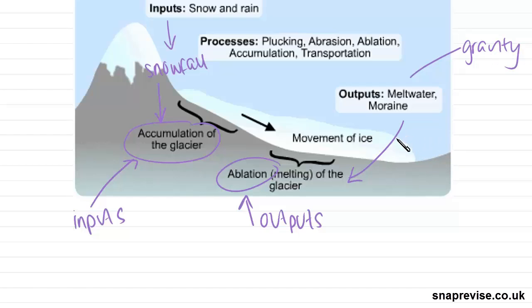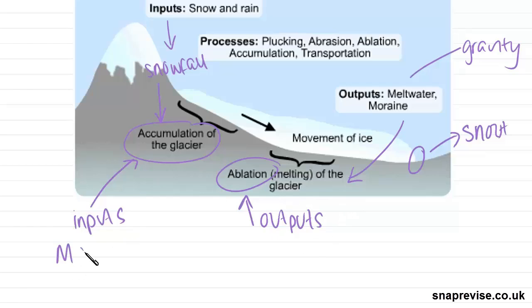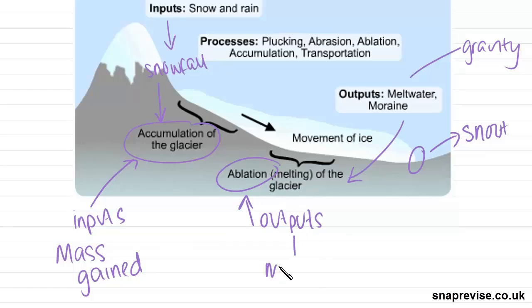And when they reach the end of the glacier, also known as the snout of the glacier, they become our outputs. So the inputs is the mass gained by the glacier, and our outputs, also known as ablation, is the mass that is lost.